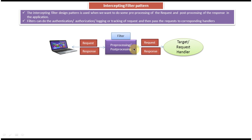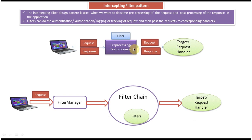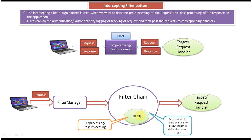Next we will see what components are involved in the intercepting filter design pattern. There are five components: client, filter manager, filters, filter chain, and target or request handler. Filters are used to preprocess the request and post-process the response. The main responsibility of the filter chain is that it contains an ordered collection of filters and is responsible for executing the filters in a defined order.